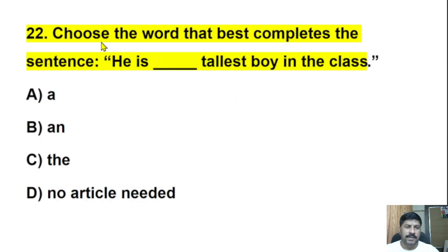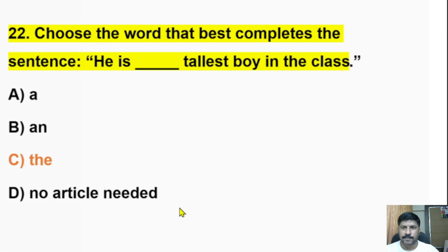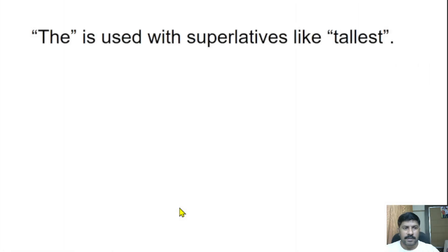Twenty-second question: Choose the word that best completes the sentence. He is dash tallest boy in the class. A, an, the, or no article needed? The correct answer is 'He is the tallest boy in the class.' 'The' is used with superlatives like tallest.